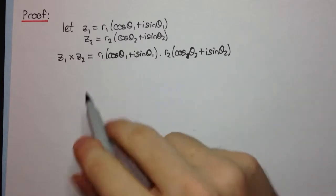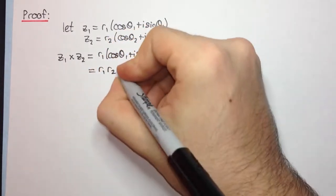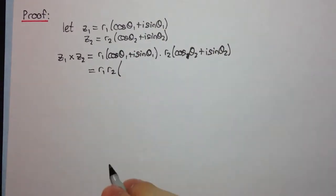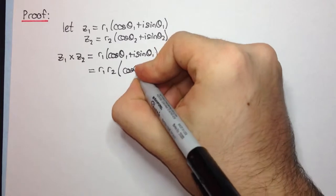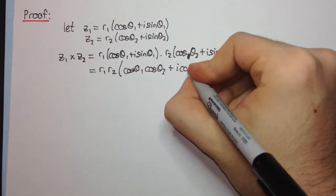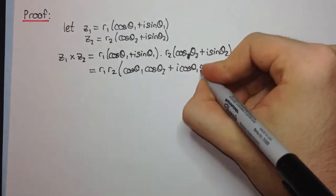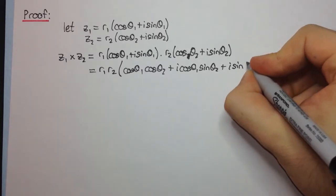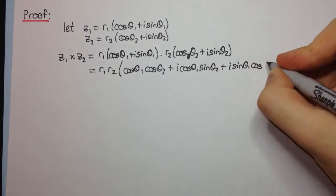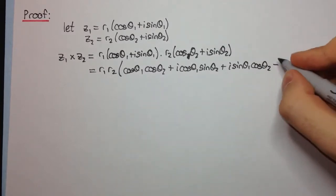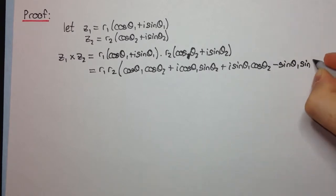Okay, now let's move this r2 out the front, r1 r2 and let's expand these brackets here. So I'm sure you all know how to expand these brackets so I won't spend too long on it. We're going to have cos theta1 cos theta2 plus i cos theta1 sin theta2 plus i sine theta1 cos theta2. And we're going to have i squared here, which will be minus 1, so minus sin theta1 sin theta2.